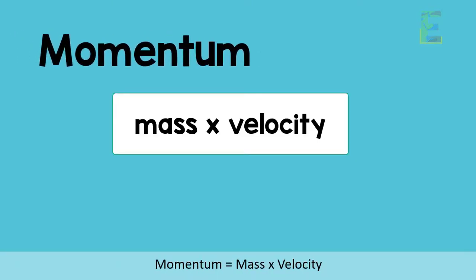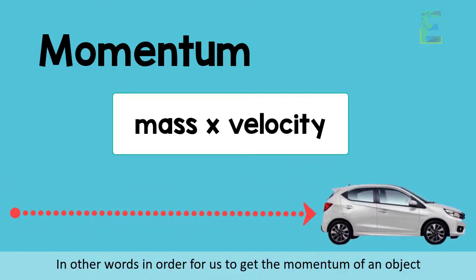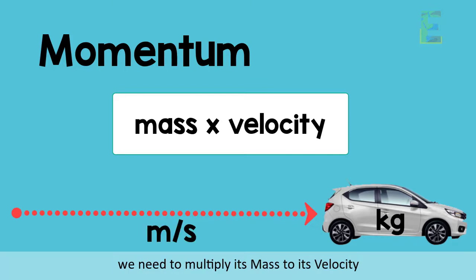So the formula of momentum is momentum equals mass times velocity. In other words, in order for us to get the momentum of an object, we need to multiply its mass to its velocity.